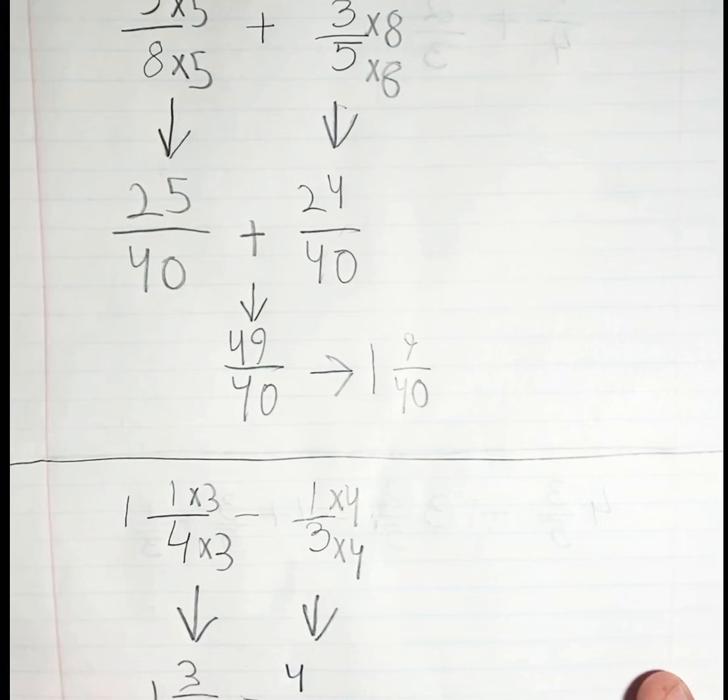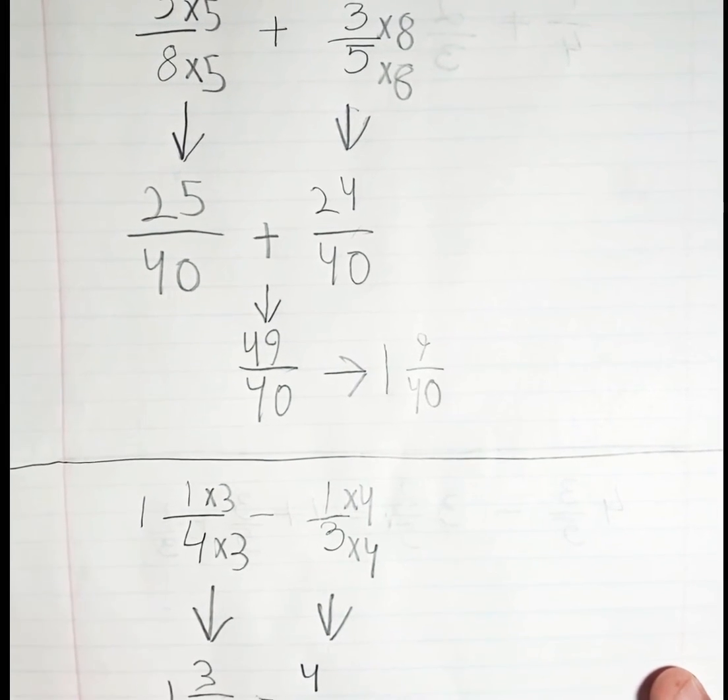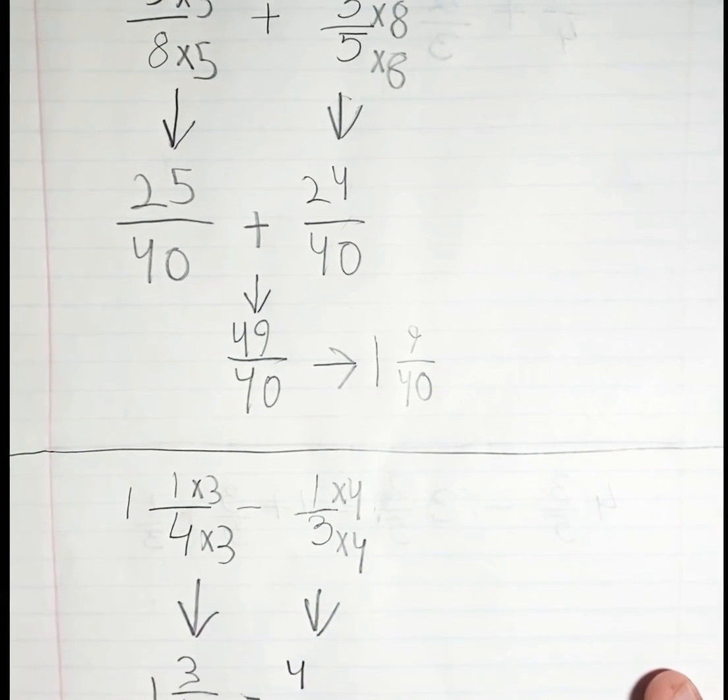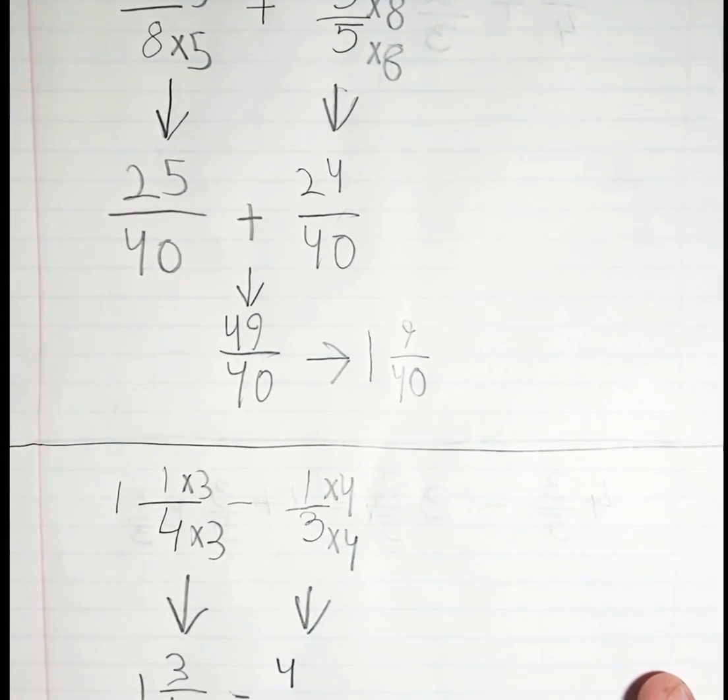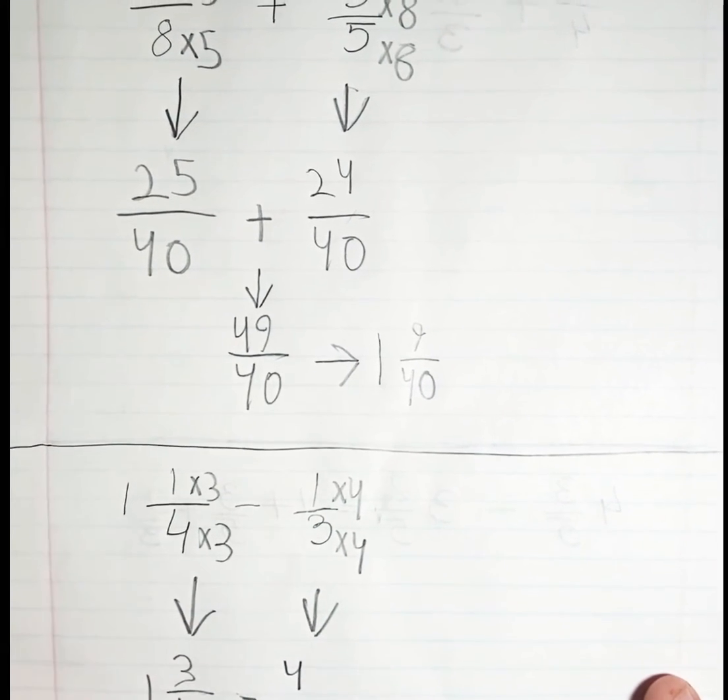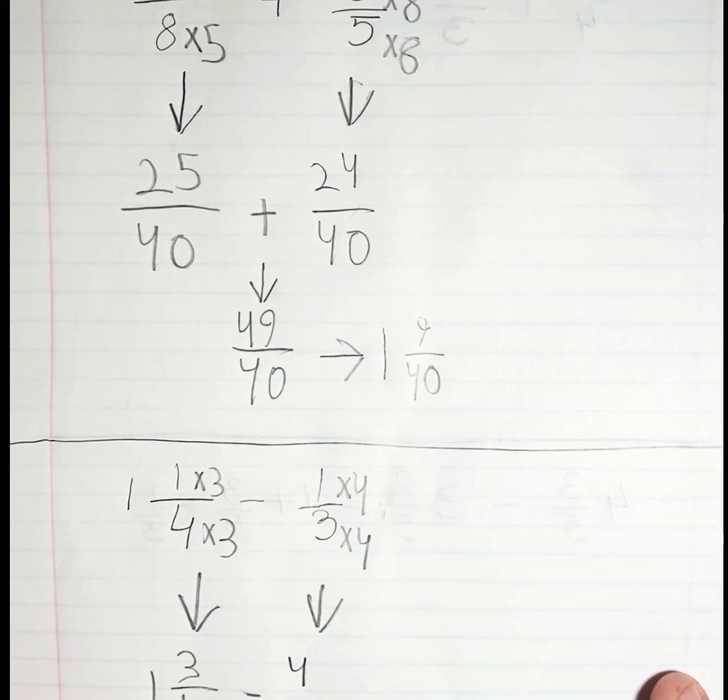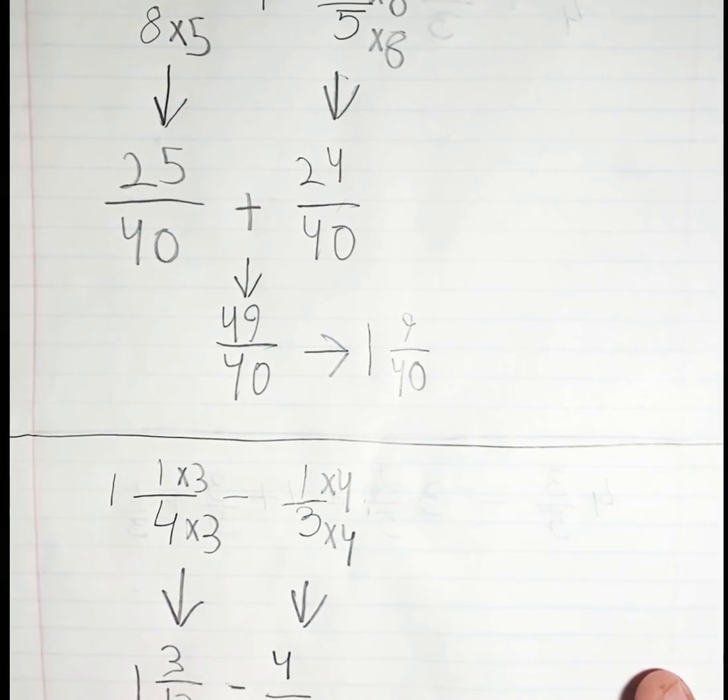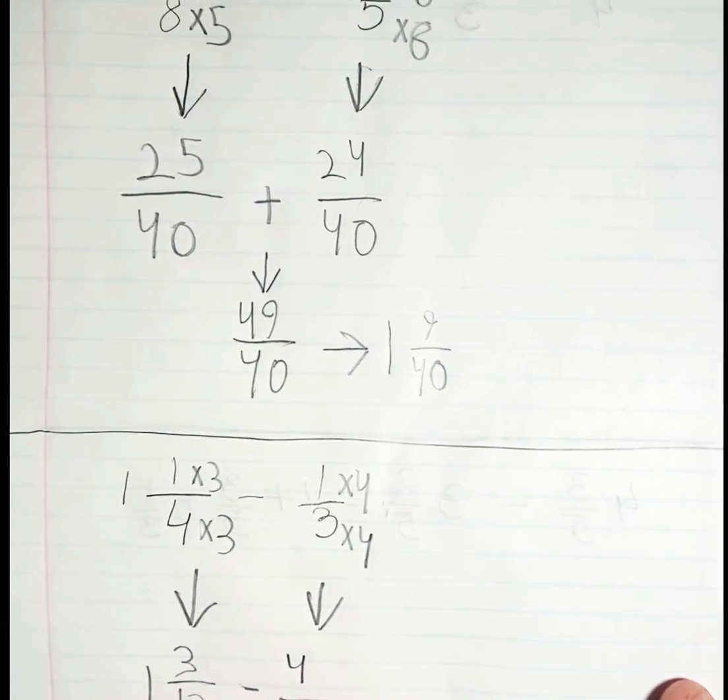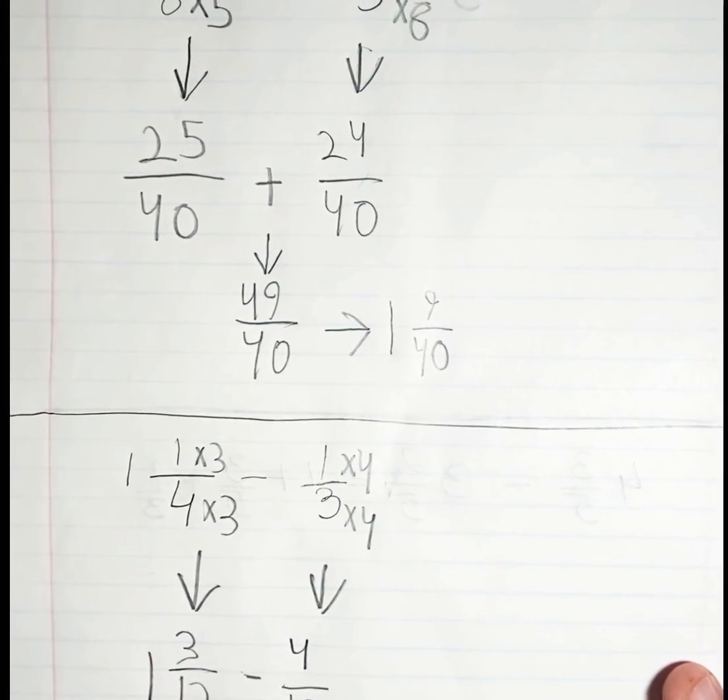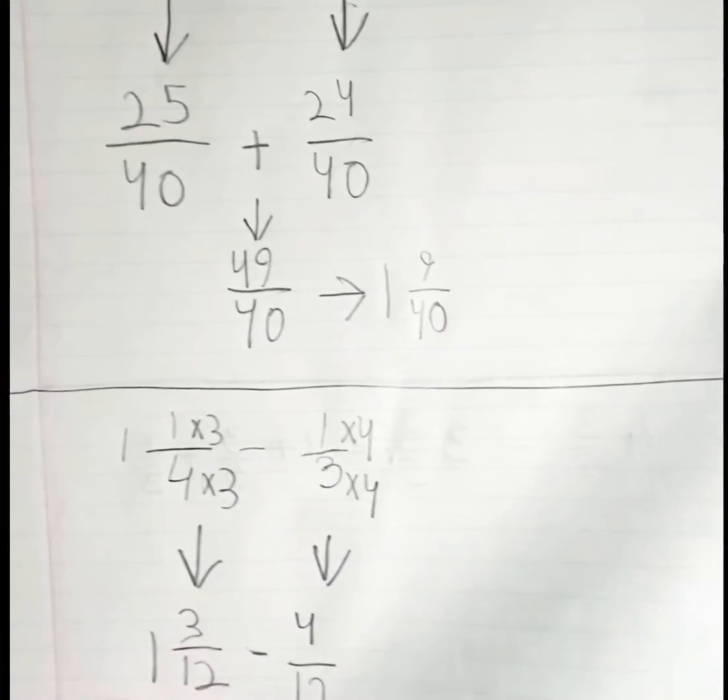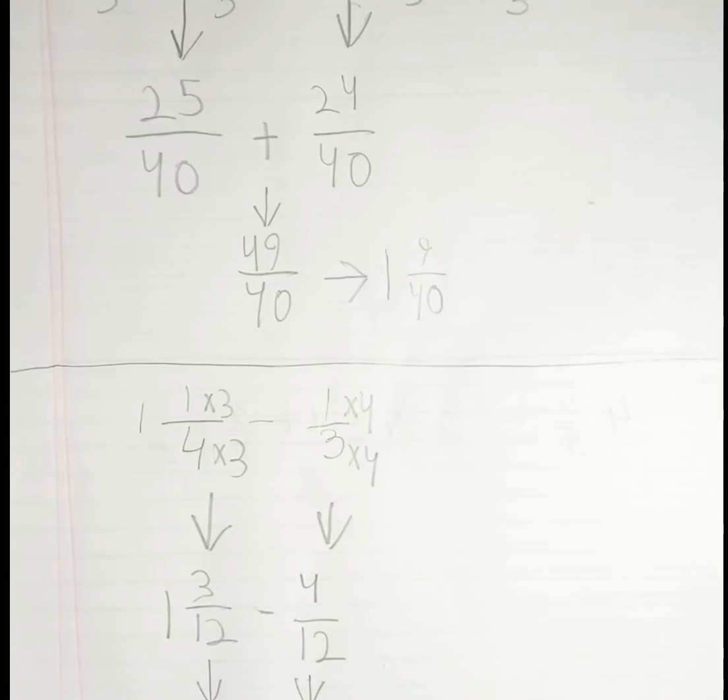You guys might be wondering how I got 15. I got 15 because I have one whole unit, so 1 whole is 12/12, so that's 12 plus 3 is 15/12. Now we can subtract, which is 11/12. So 11 is smaller than 12, so we cannot make a group of 1.